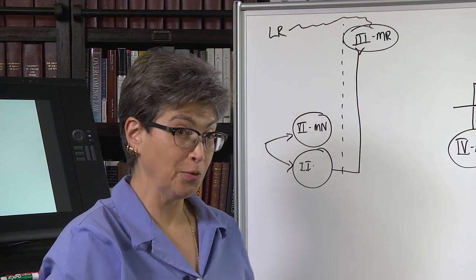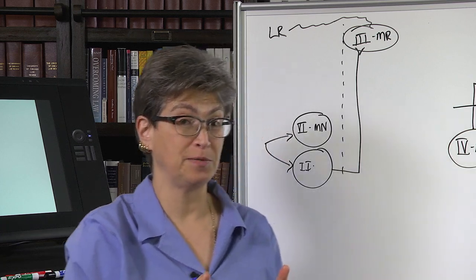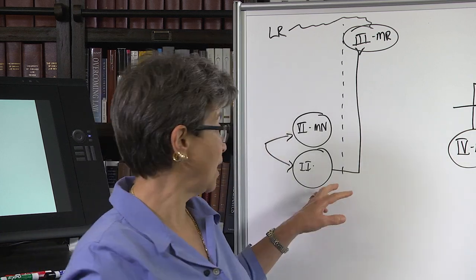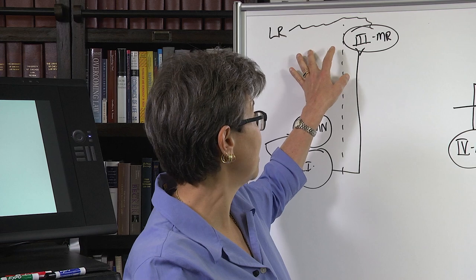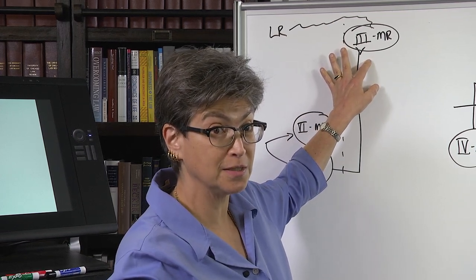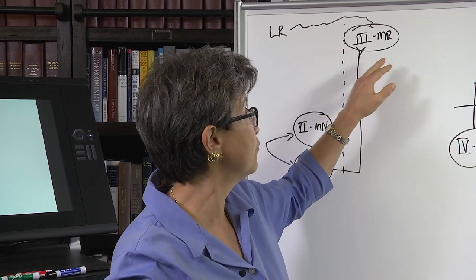But what we also know is that it's not always a pair. Sometimes the lateral rectus is not yoked to the medial rectus. And that occurs, for example...